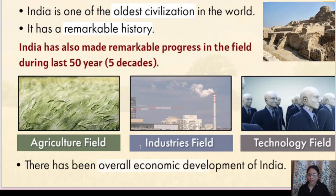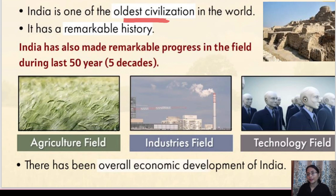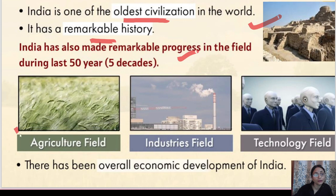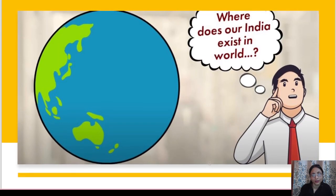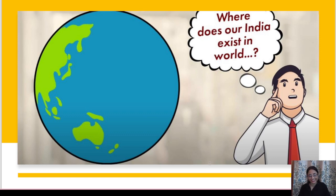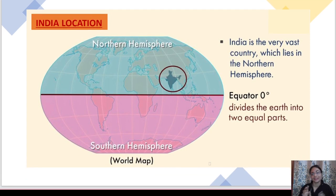India is one of the oldest civilizations in the world and has a remarkable history. It has made remarkable progress over the past five decades in the fields of agriculture, industries, and technology, leading to overall economic development. The question arises: where does India exist in the world? Let's look at India's location.